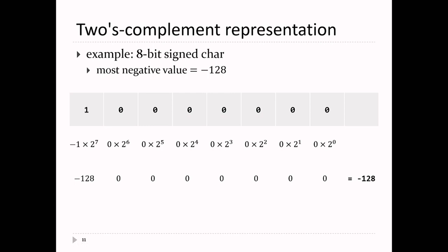What's the most negative value? The first digit has to be a one because it's negative. All the other digits contribute a positive amount to the total value. So the most negative number: the first digit is one and the rest must all be zero — otherwise it would be minus 128 plus some positive value. So that's the most negative number, which is minus 128.